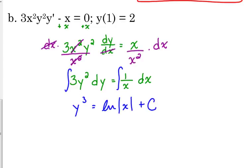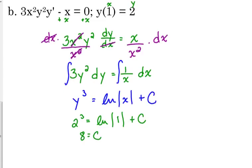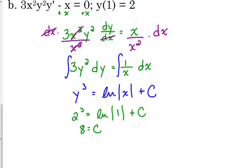That's our general solution. We want the particular solution, so let's plug in our initial condition. When x is 1, y is 2. We have 2 cubed equals the natural log of the absolute value of 1 plus c. Well, the natural log of 1 is 0, so that means 8 is our c.